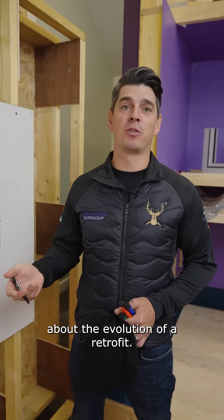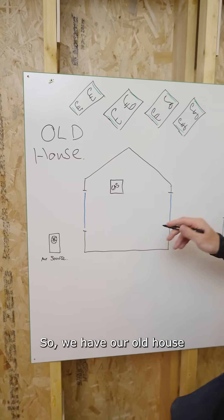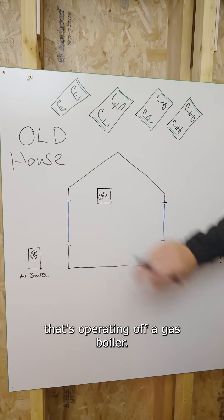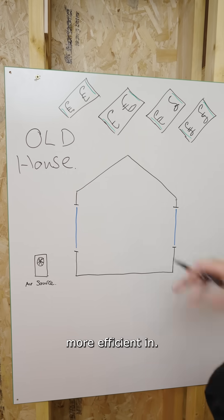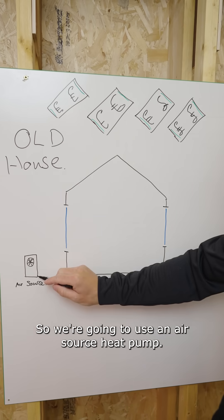Here we're going to talk about the evolution of a retrofit. We have our old house that's operating off a gas boiler. We want to get rid of that gas boiler and put something more efficient in, so we're going to use an air source heat pump.